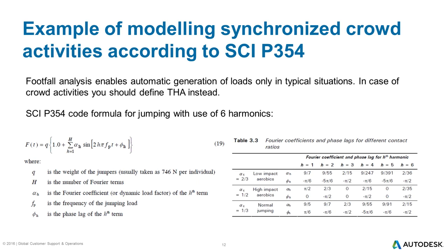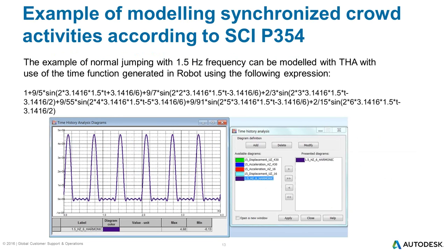The table in the bottom right corner displays Fourier coefficients and phase angles for different types of activities. For a normal jumping scenario with 1.5 Hz frequency, you can define the time function using the Add Expression tool. In the formula, T stands for time, while the other factors are taken from the table shown on the previous slide. Note that radians are used instead of degrees. Depending on the actual type of jumping, the values of peaks may be different as well as the length of the flat segments — among them, however, the values of the flat segments are close to zero.